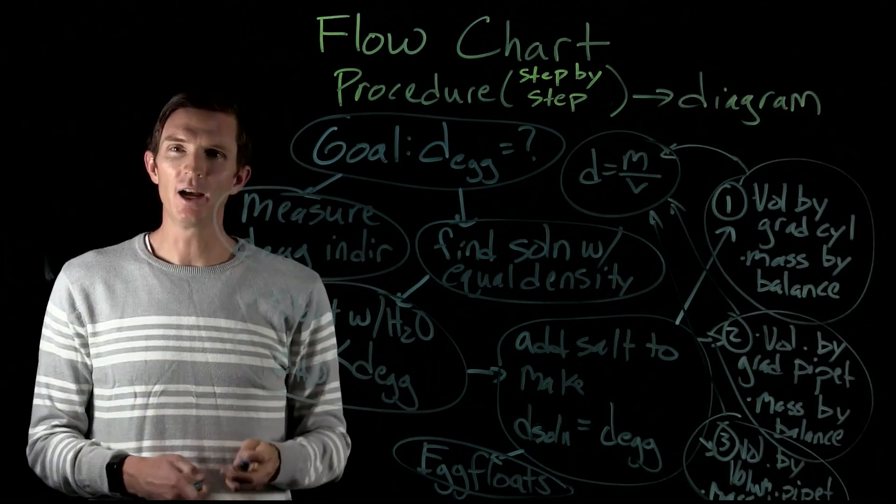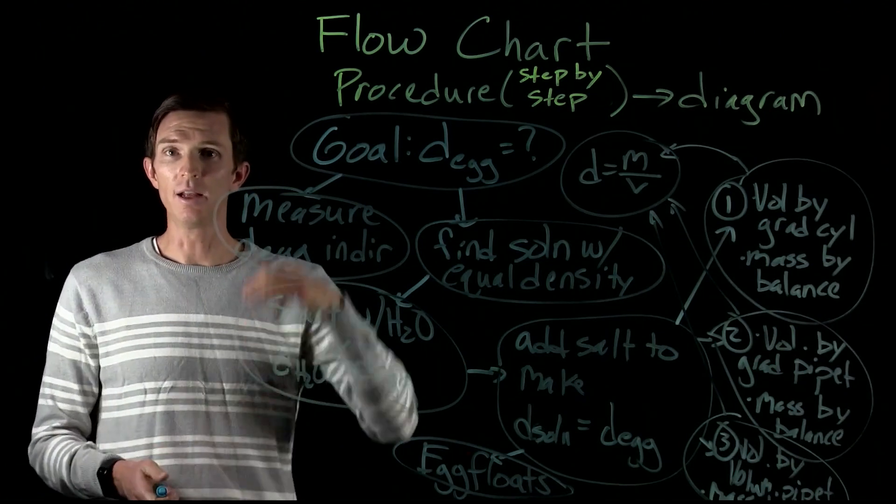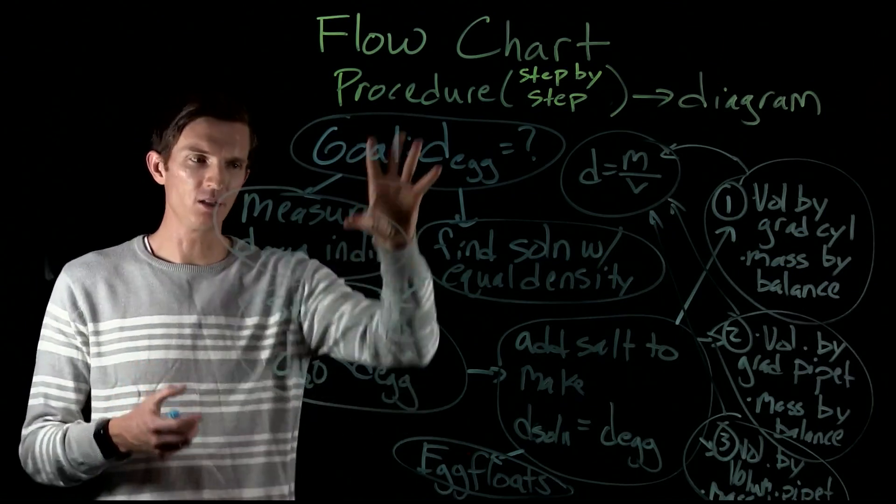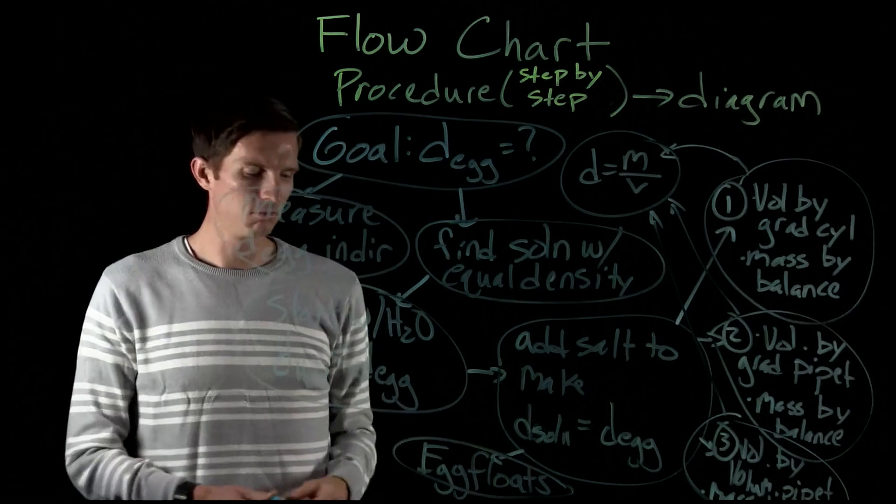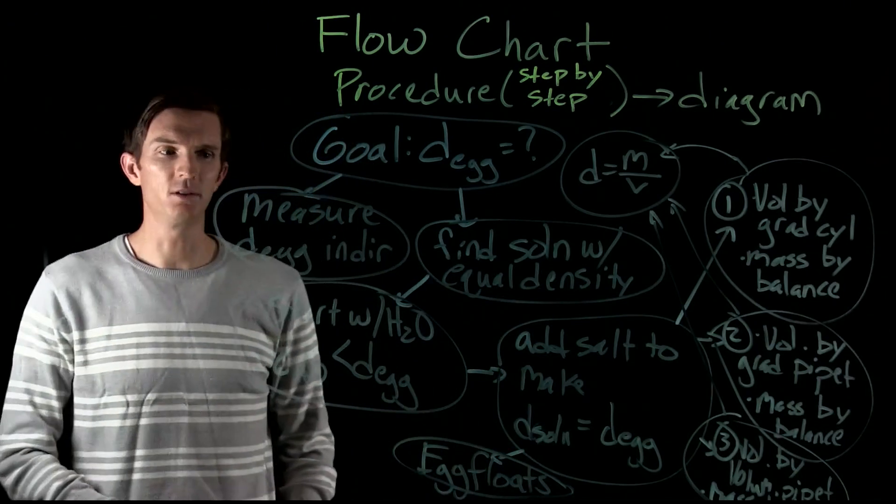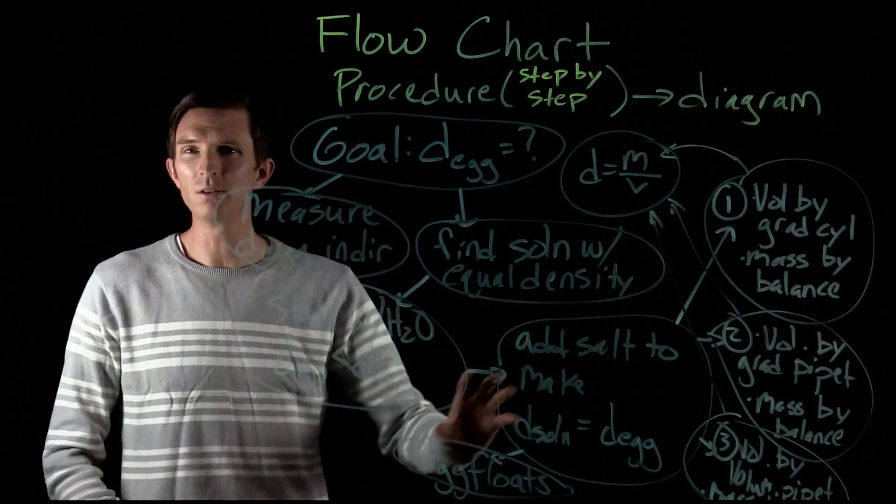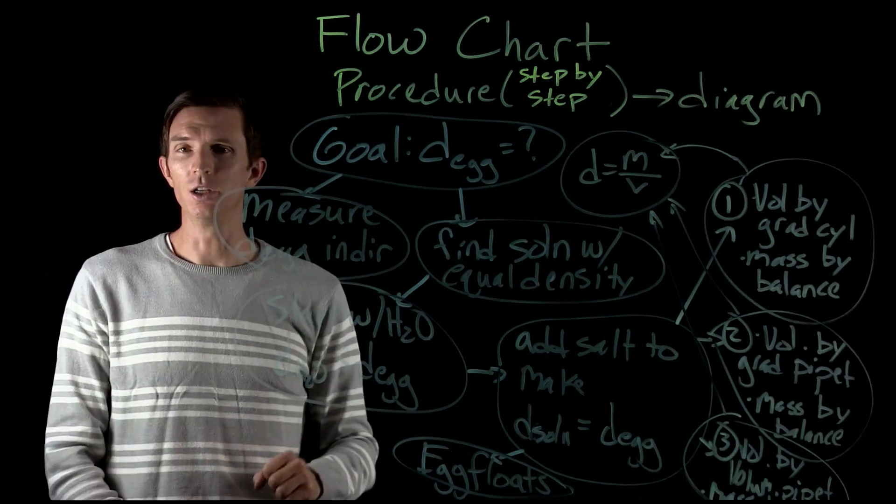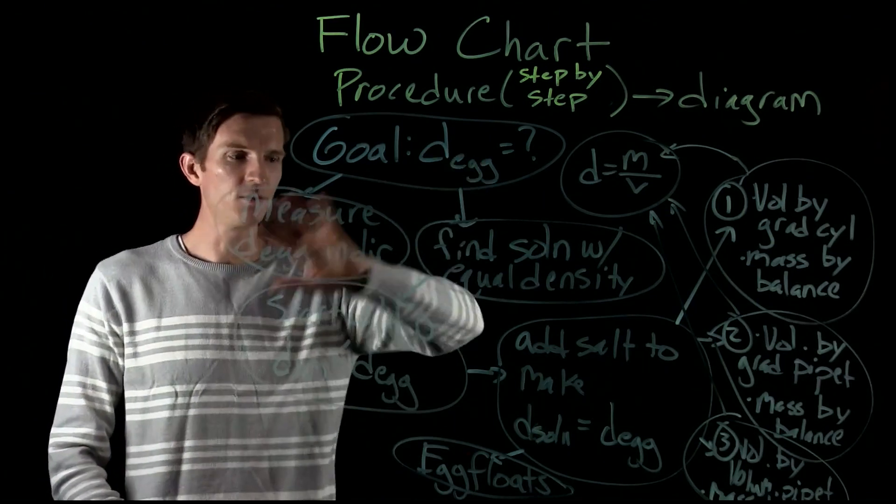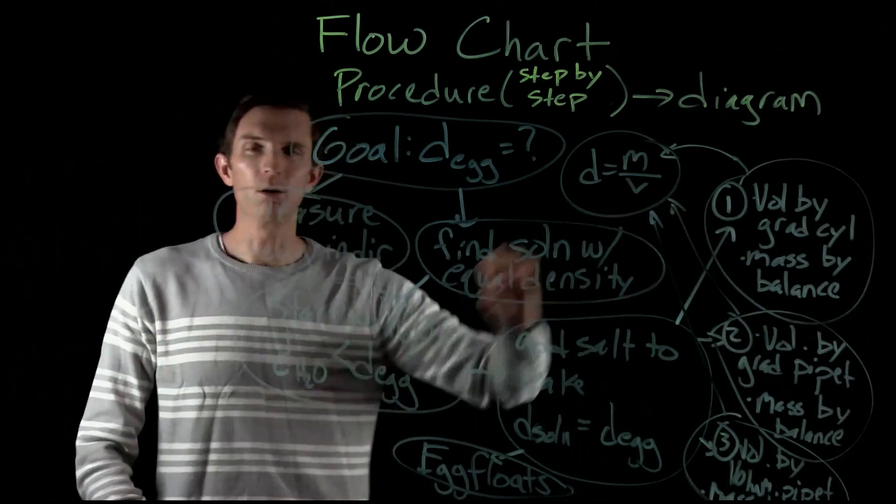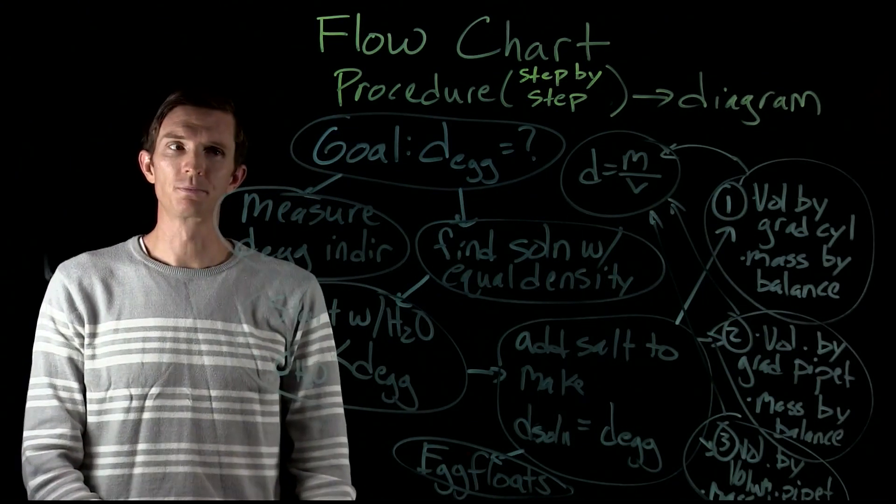The idea here is not necessarily to make it so that it's step one through fifteen but it has a general flow or diagram of what we're going to do. Now some places it may make sense for us to include concentrations or amounts of reactants that we are going to use or solutions we're going to use. Sometimes it doesn't. Sometimes it just makes sense for us to kind of write out a general process of what we're going to do.